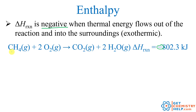Methane is the same thing as natural gas, so when you burn natural gas on your stove, it does in fact release heat — it emits heat, so enthalpy is represented with a negative sign. Keep in mind the positive or negative sign is just a convention to let us know if energy is being emitted or absorbed. You can't actually have negative energy; the negative just indicates that energy is being emitted.